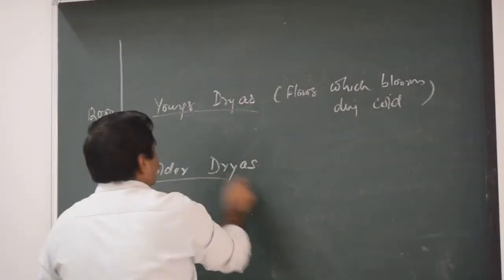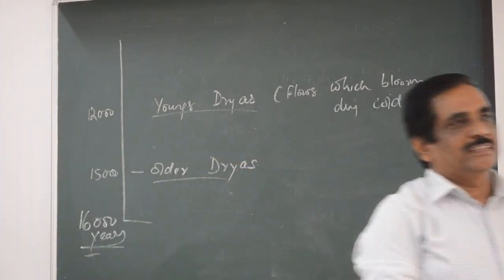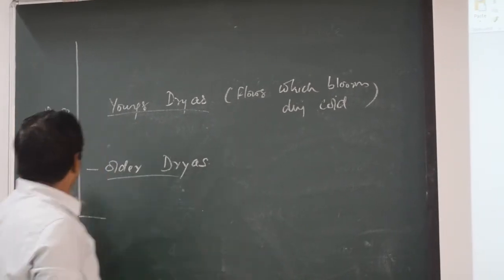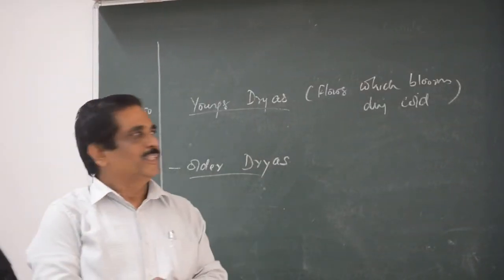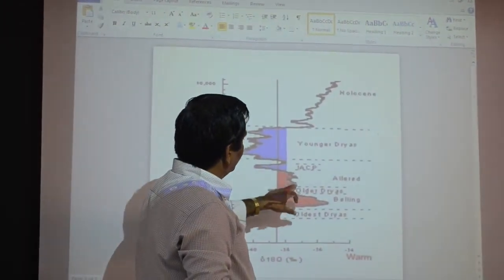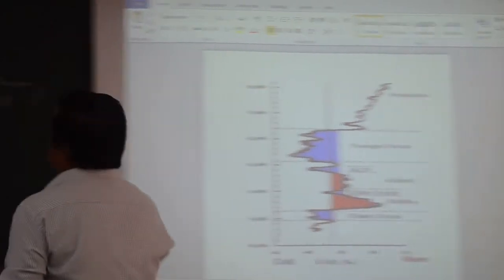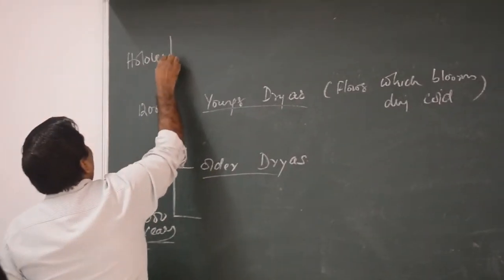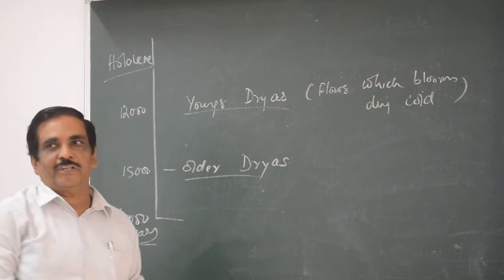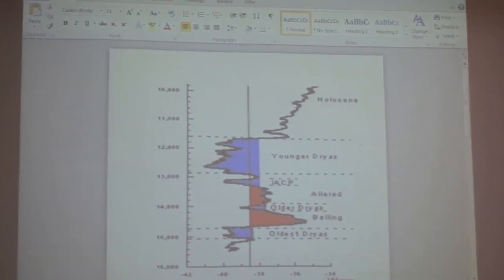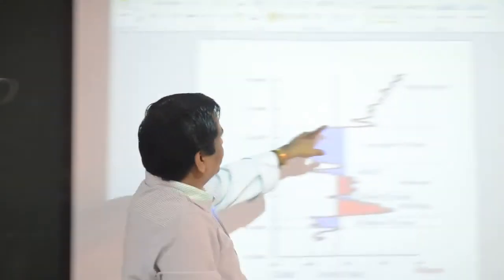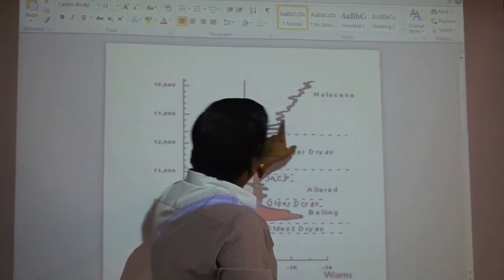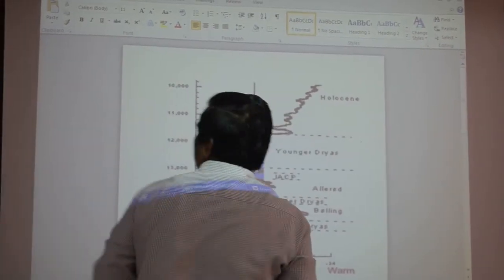These Dryas flowers are preserved in the ice cores, and that is why the cold periods have been named Older Dryas and Younger Dryas — one at 15,000 years and another at 12,000 years. These are the two main cold periods. After the Younger Dryas, the Holocene begins — which is overall a warming period, though with some cold intervals within it.